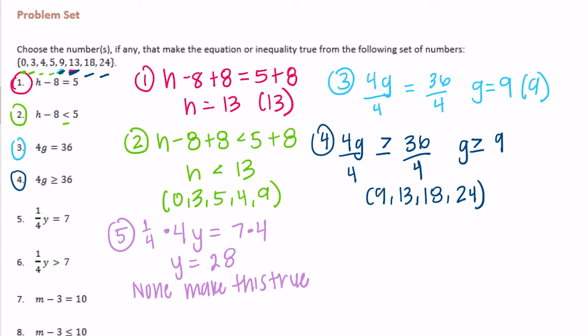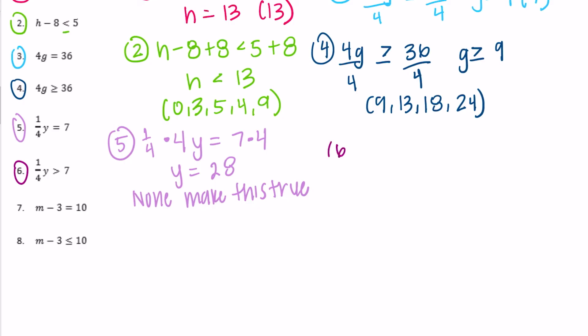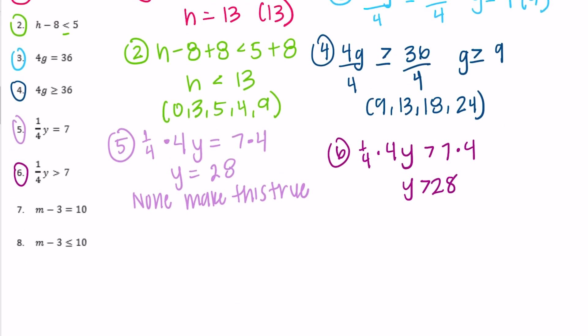Number 6: one-fourth times 4y is greater than 7 times 4, so y is greater than 28. Do we have anything greater than 28? Nope. The largest we have is 24. So again, none make this true.